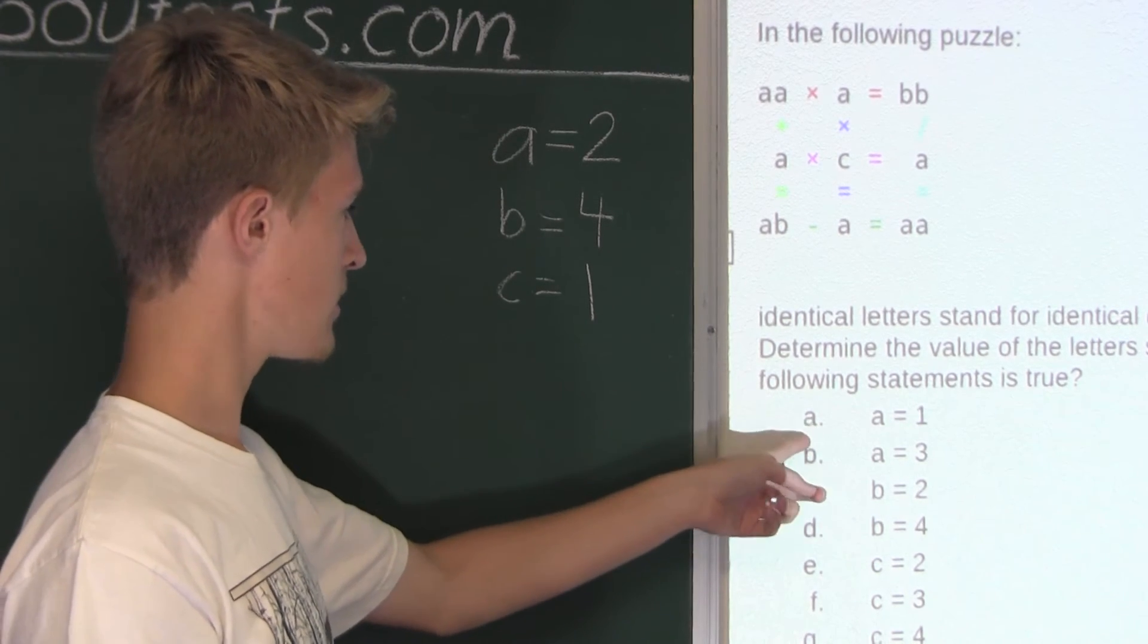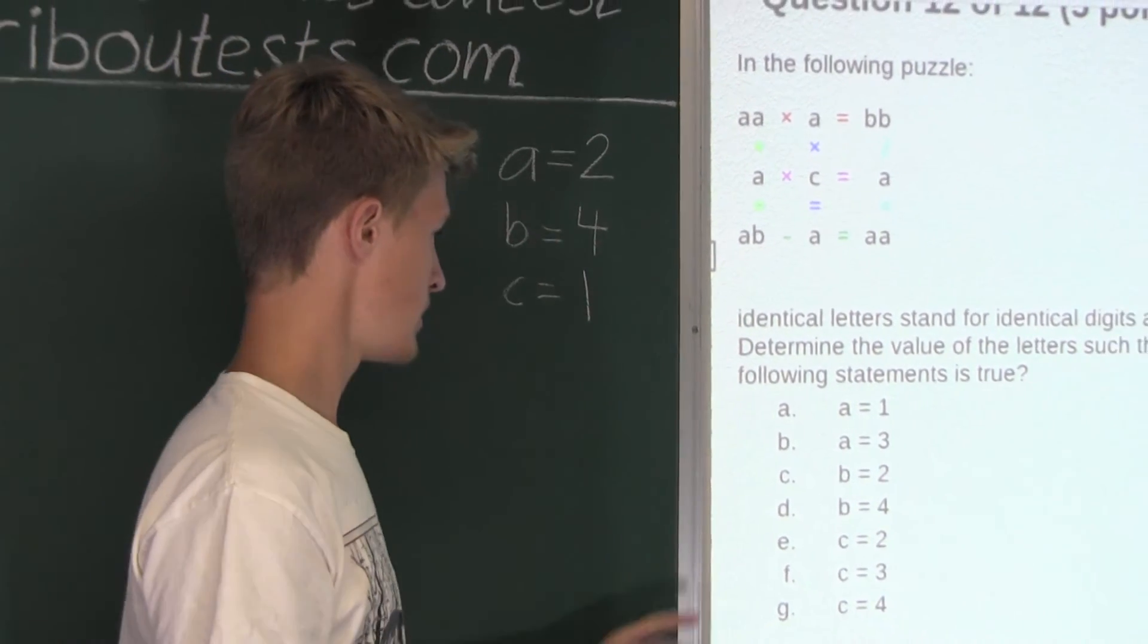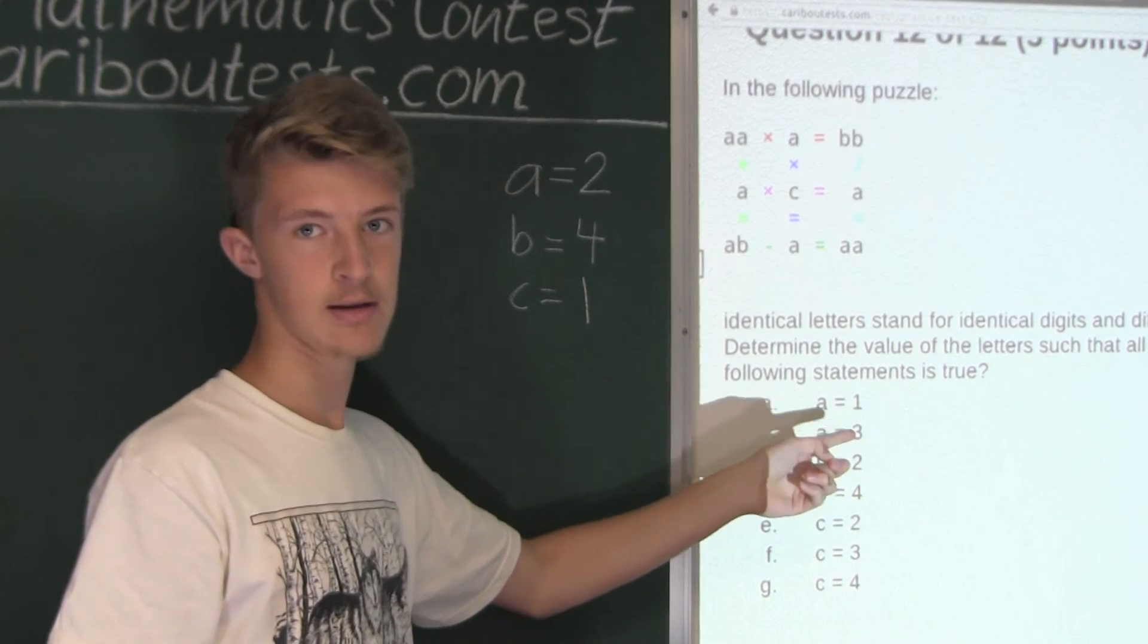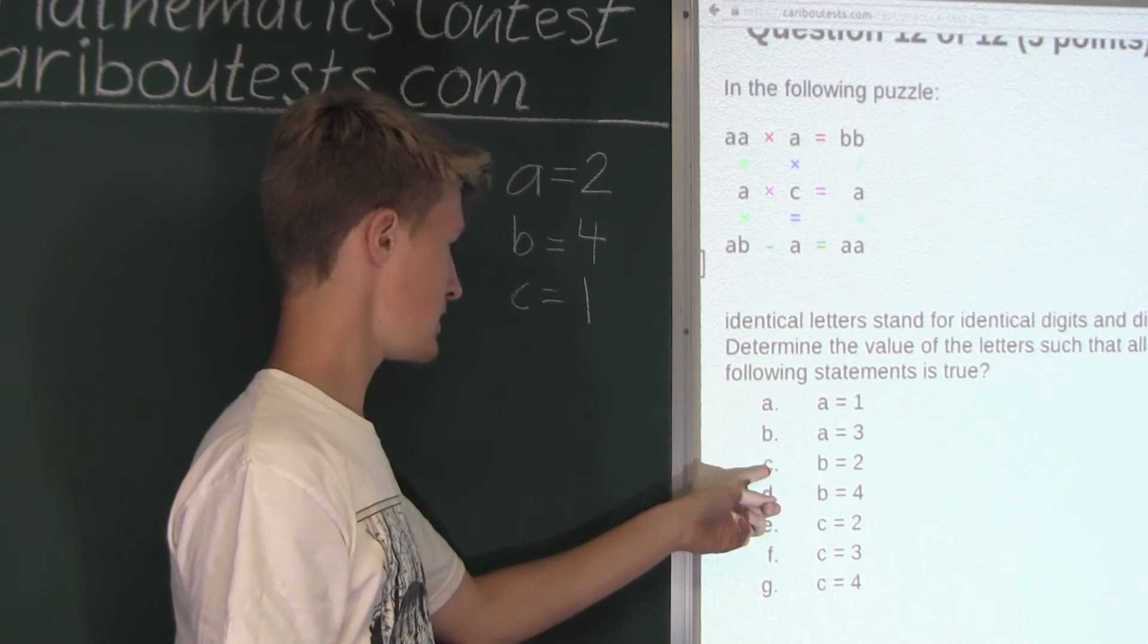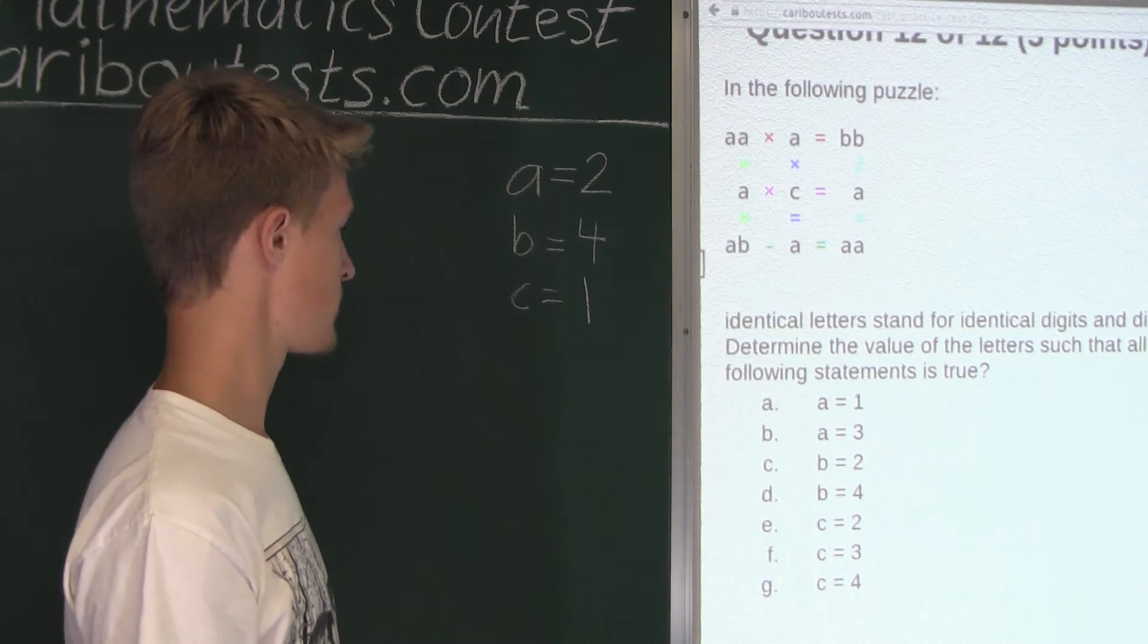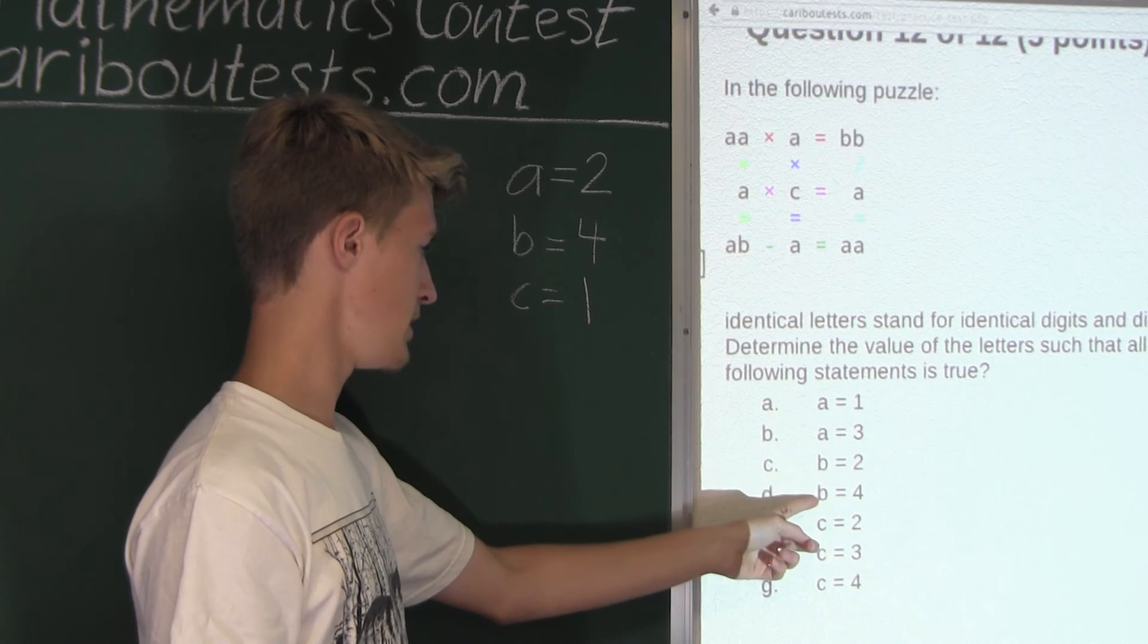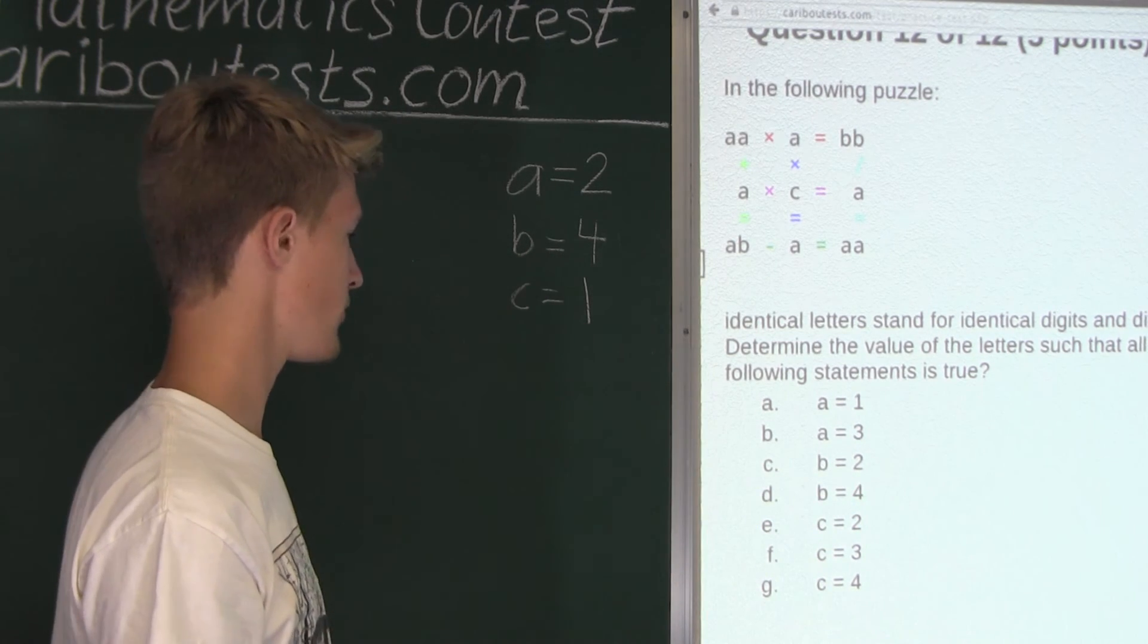Now for option A, A equals 1. No, that's not true. A is 2. Option B, A equals 3. That's false because A is equal to 2. Option C, B equals to 2. That's false because B is equal to 4. Option D, B equals to 4. Well, that is true because here B is equal to 4.